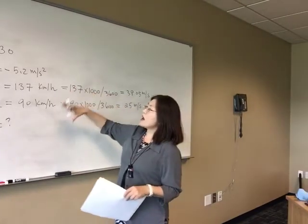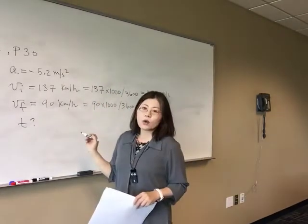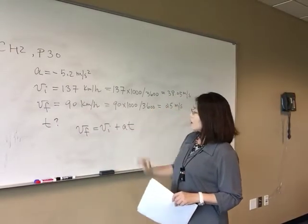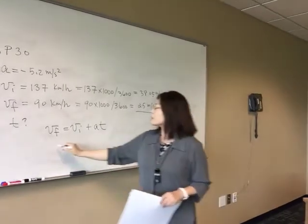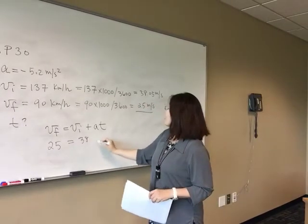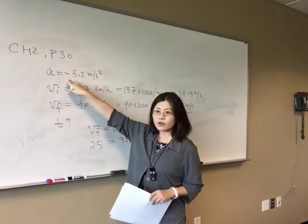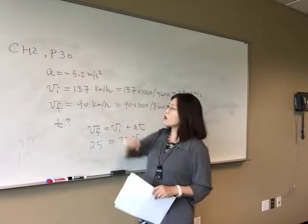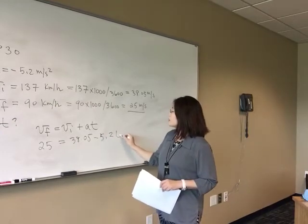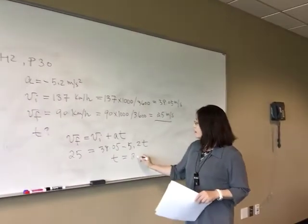Now you have initial velocity, final velocity, and acceleration. Based on the equations of motion, the final velocity equals initial velocity plus acceleration times time. Plugging in: 25 equals 38.05 plus negative 5.2 times time. You have to manually put a negative sign in front of the acceleration because it slows the velocity down, so it's negative 5.2 times time.